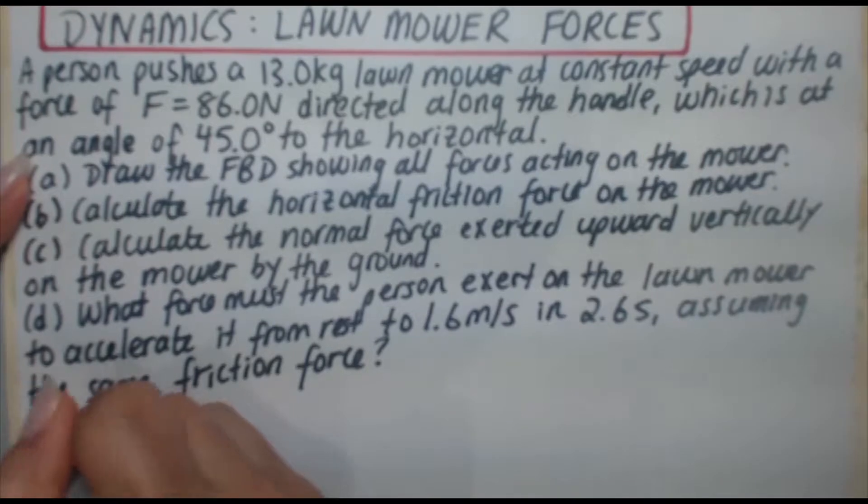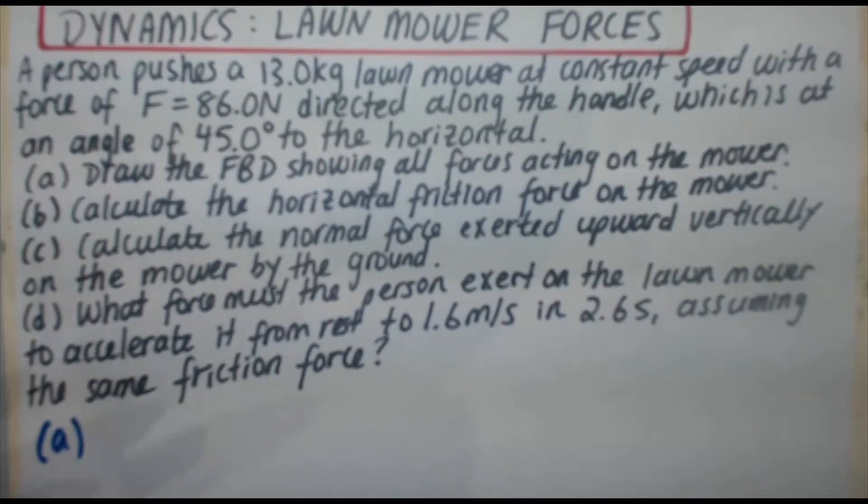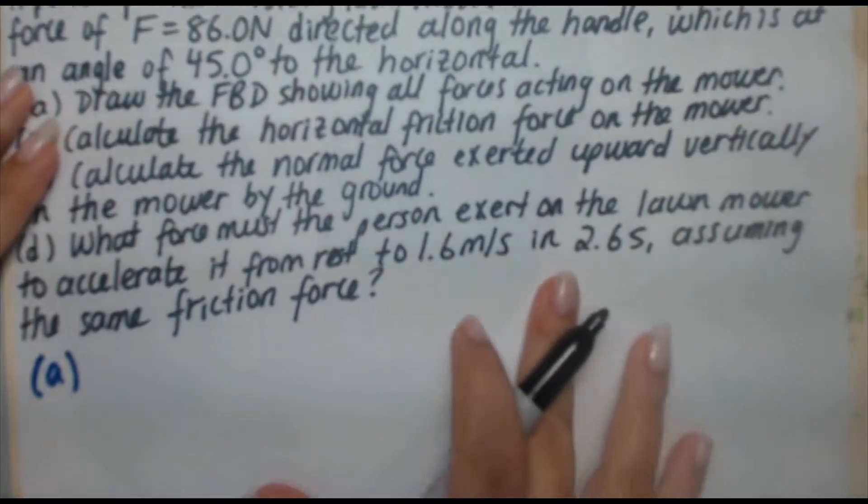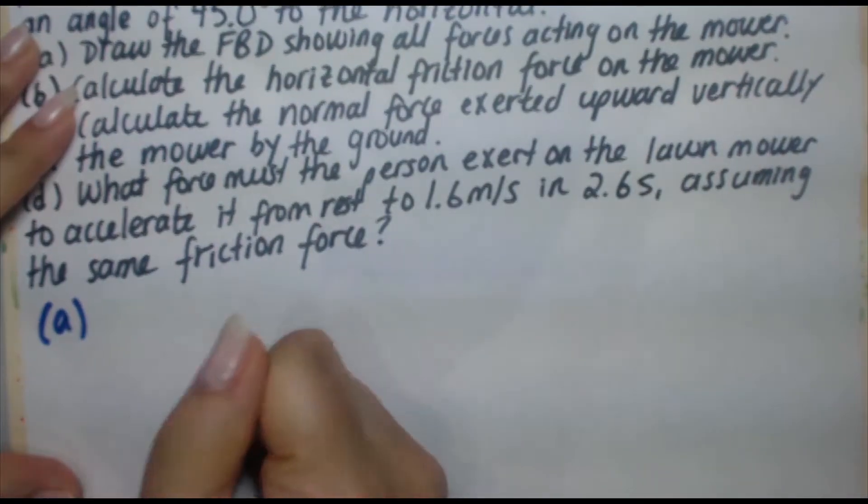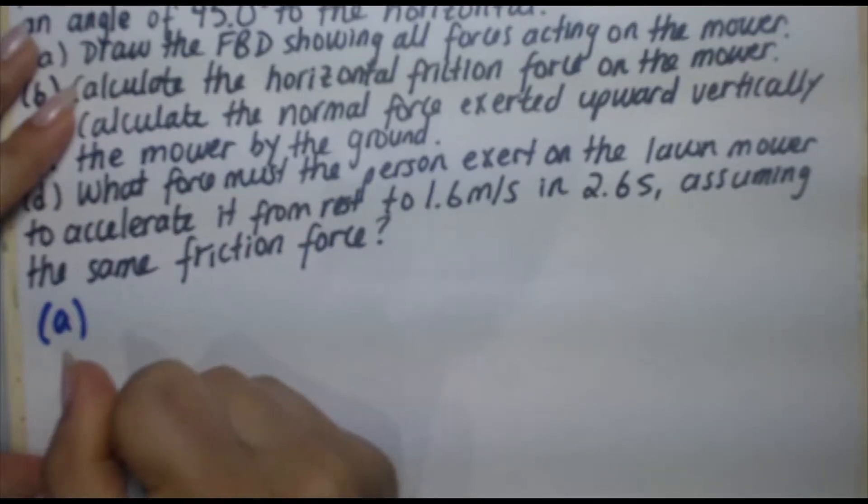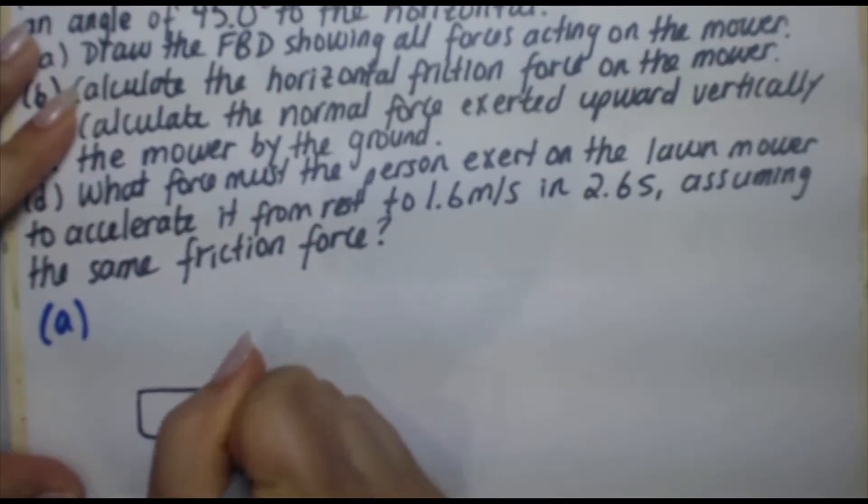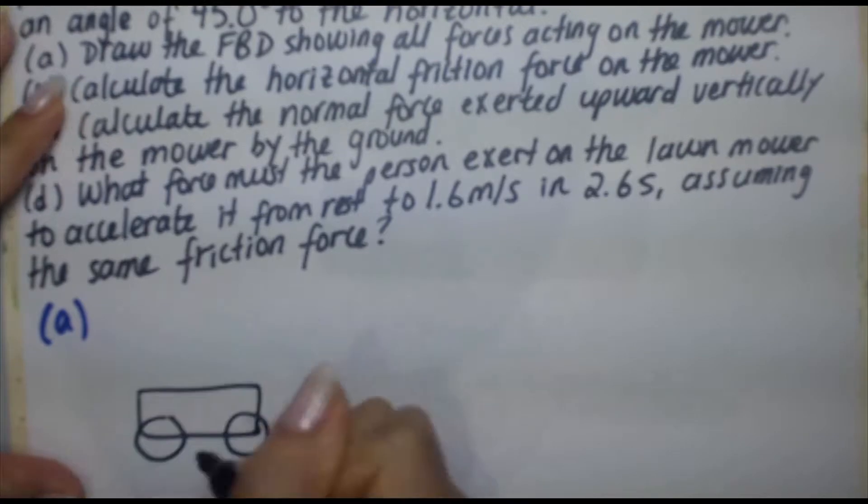Part A requires us to draw a free body diagram with all the forces acting on the lawnmower. So I'm going to do my very simple yet artistic sketch of a lawnmower first. So we've got our giant body here, the rectangle. We've got our wheels, clearly proportional.